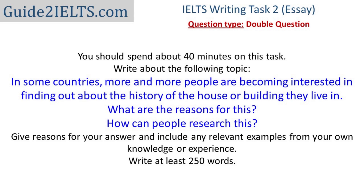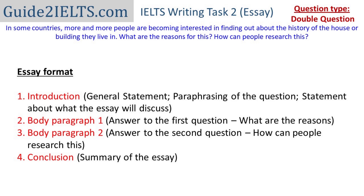I'll start planning this essay and, as I plan it, I'll try to run you through how I'm coming up with ideas. Before I start planning, I already know the basic format: first, the introduction; second, the reasons — answering the first question; third, how we can find out about the history of these places — answering the second question; and lastly, a conclusion. The conclusion here would just be a summary, because I don't have to write an opinion. Unlike agree/disagree or advantages/disadvantages essays, there's no side to take.